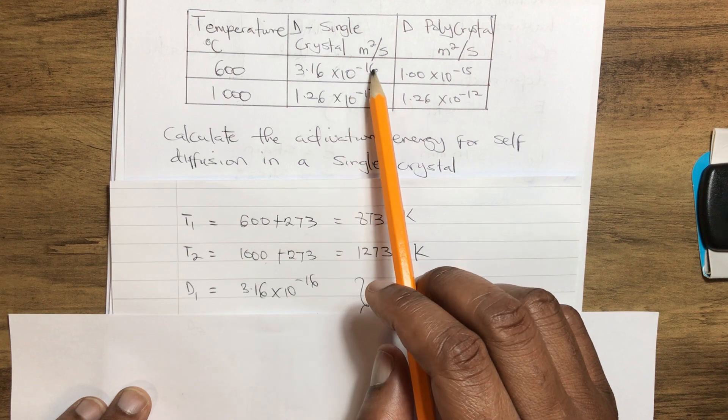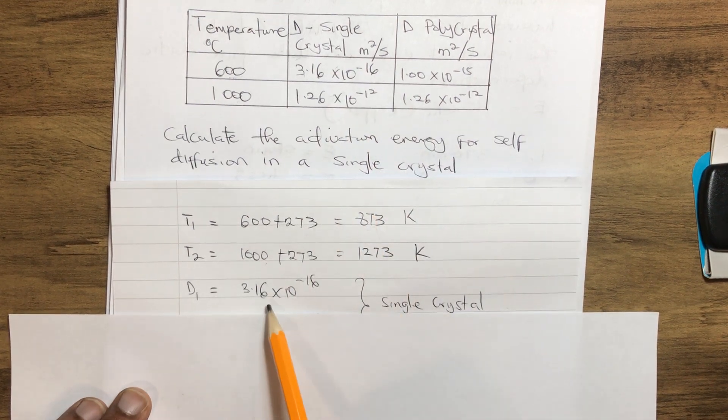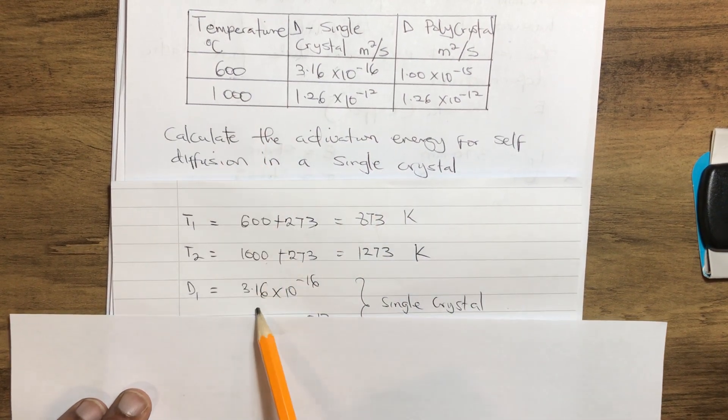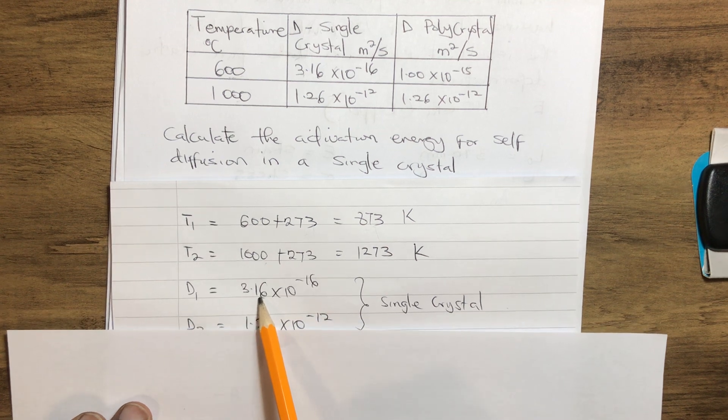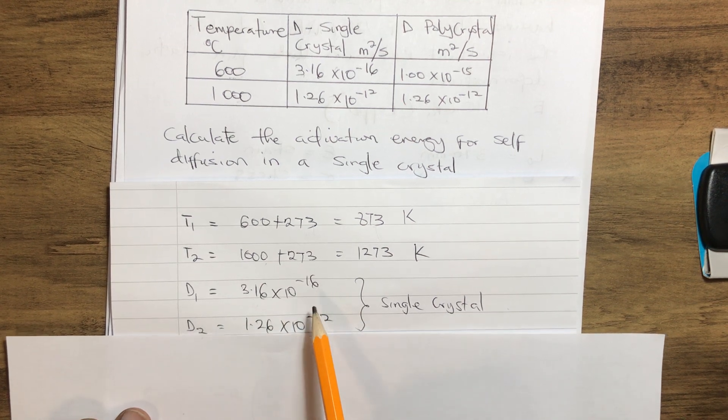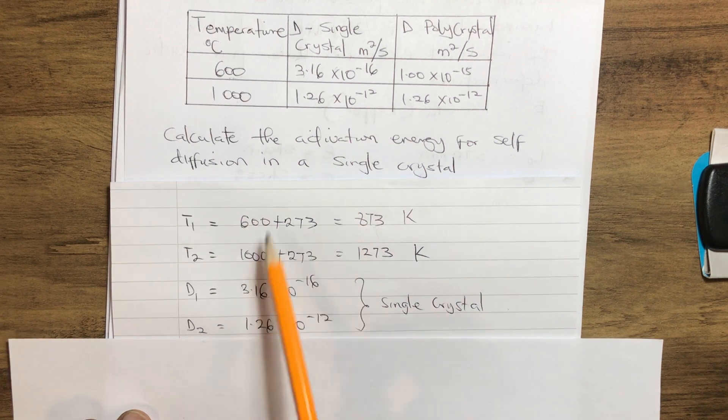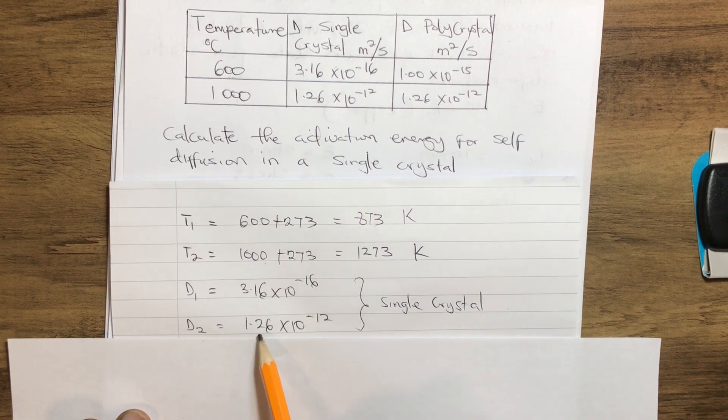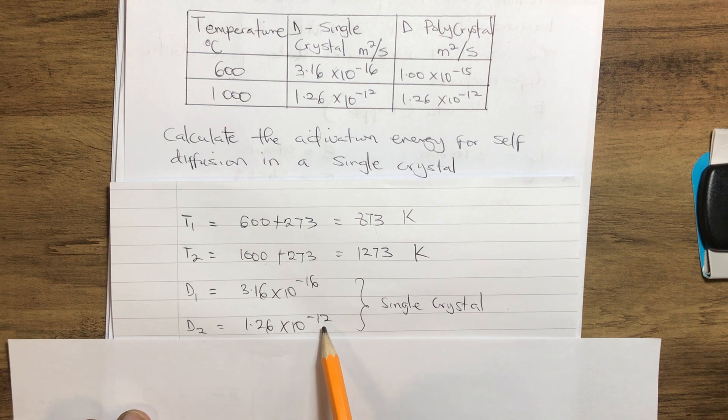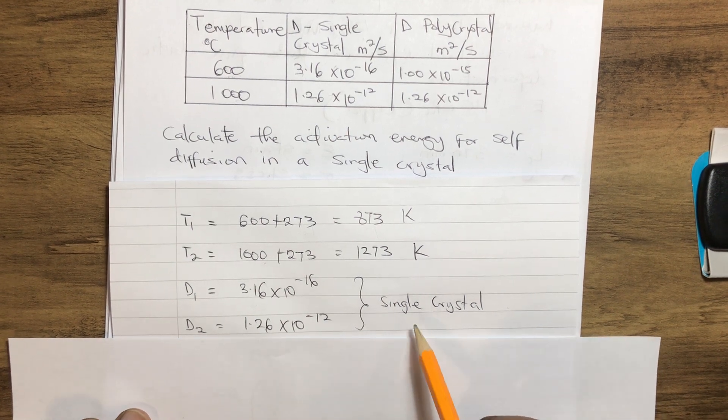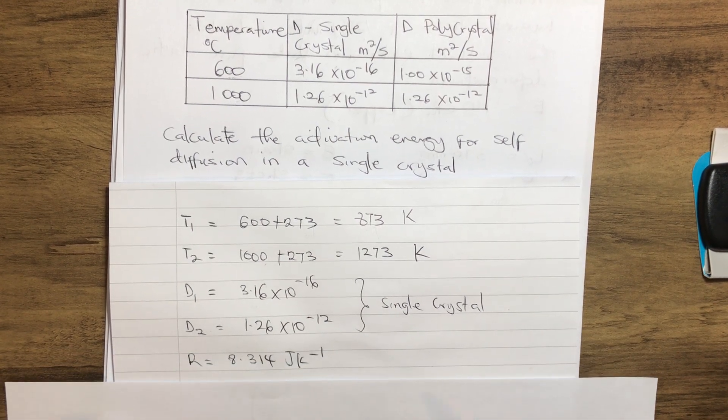We have the single crystal diffusion coefficient at 600, which gives us 3.16 × 10^-16. Also, we have the single crystal at 1000, which gives us 1.26 × 10^-12.